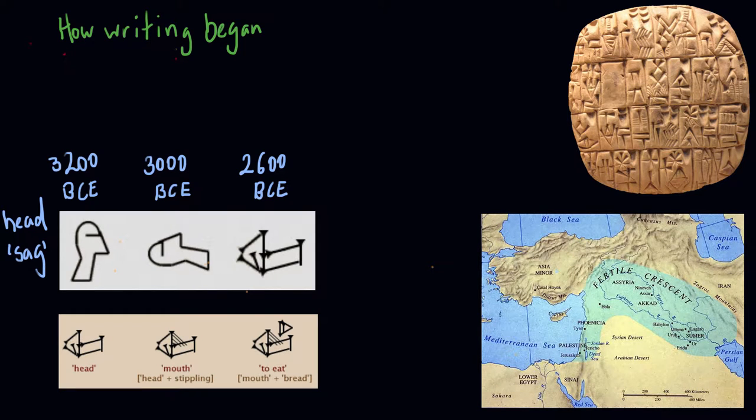In this video we're going to look at how writing began, how we as humans developed a set of signs that would represent the language we speak in a textual medium or a material form.